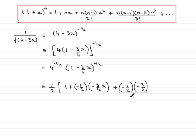2 factorial is 2 times 1, or just simply 2, and then times a squared. But our a is minus 3 quarters x, so that's minus 3 quarters x all squared. Don't forget to put plus and so on on the end, and then we close the bracket.